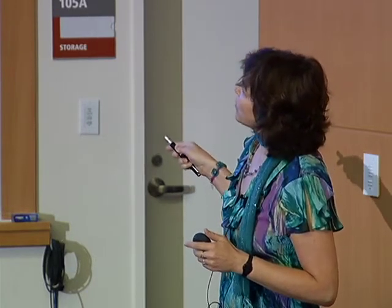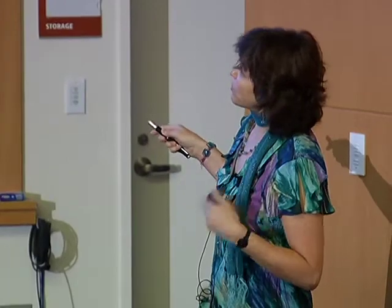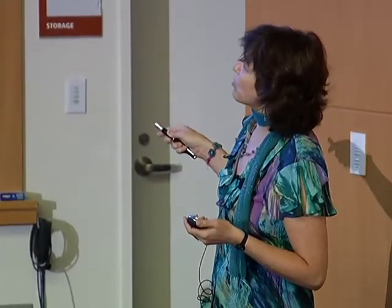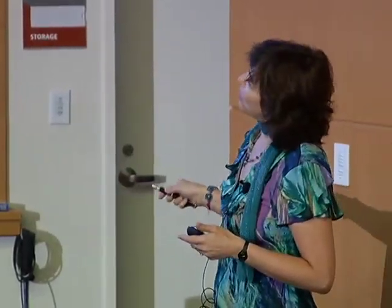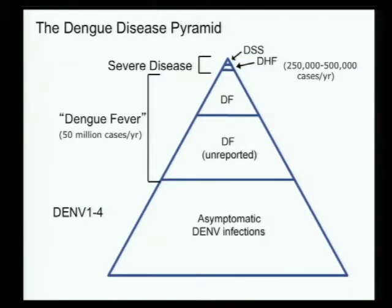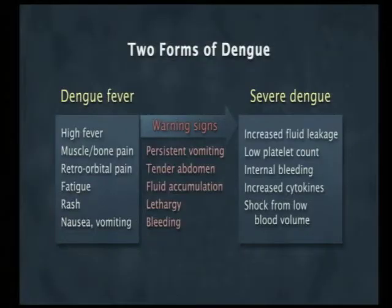When you look at these pyramids of disease, you have the most severe on top, then dengue fever, and then unreported dengue fever — we've shown in our studies there's at least 20-fold more dengue happening than is actually reported to health systems. At the bottom are asymptomatic infections. The problem with dengue is that all of these asymptomatic people are now actually at higher risk for severe disease, creating a really huge population-level problem.